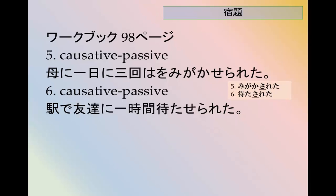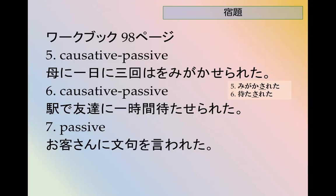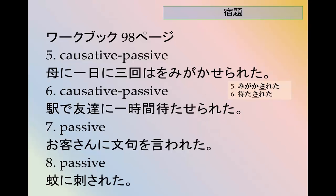駅で友達に一時間待たせられた. Number 7: passive — complaints were said about you. お客さんに文句を言われた. Number 8: also passive — it happened to you, you weren't forced to be stung by a mosquito. 蚊に刺された.